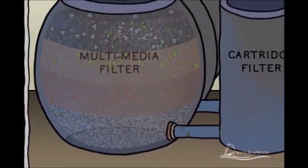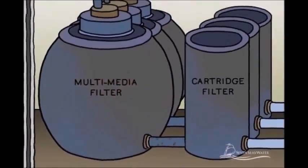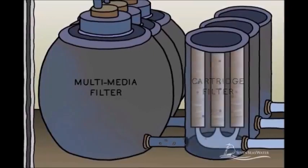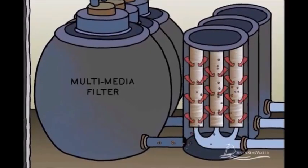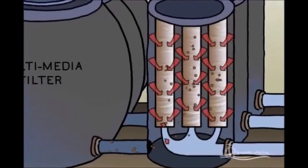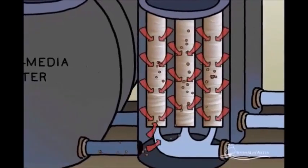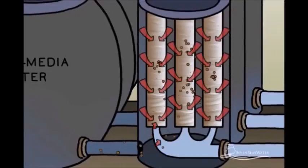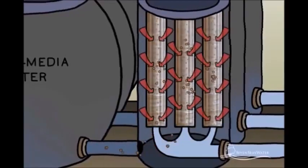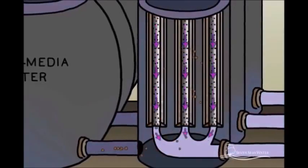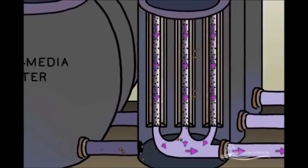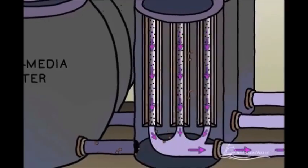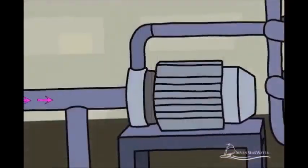Next, the filtered seawater travels to the cartridge filters, which act as a second stage of filtration. Cartridge filters used for seawater reverse osmosis are typically made from a yarn-like synthetic material that is wound into cartridges. These remove even smaller solid particles from the seawater, such as fine sand and clay, before the seawater proceeds to the reverse osmosis membranes.